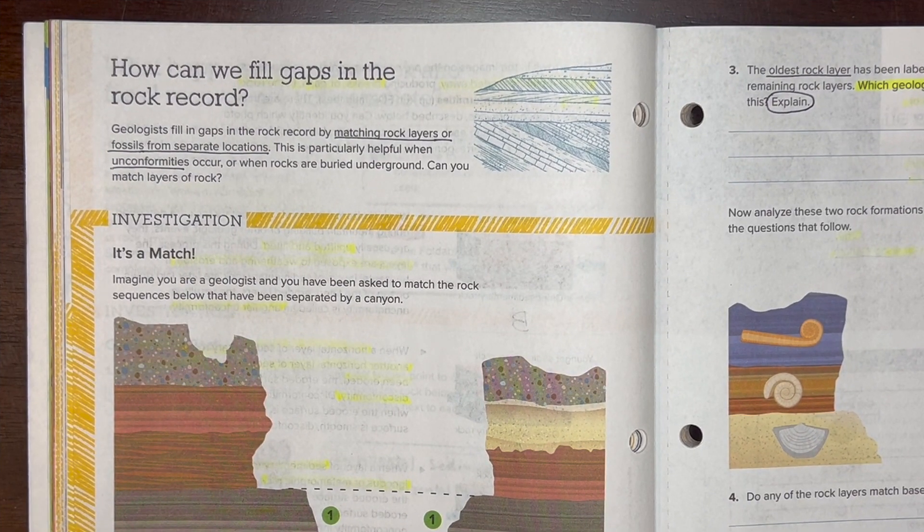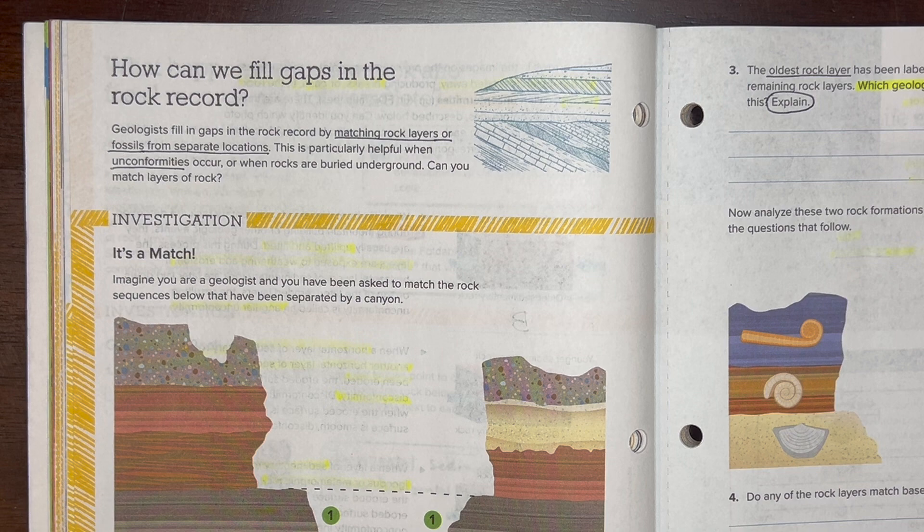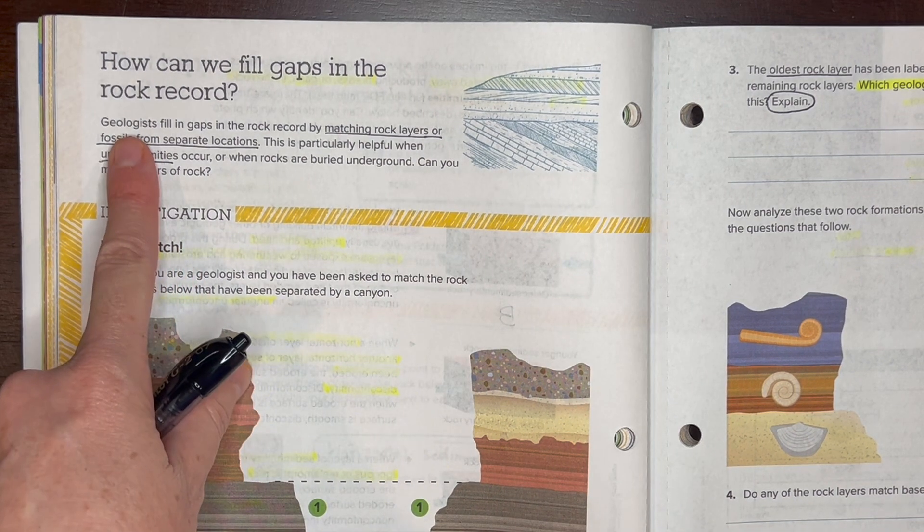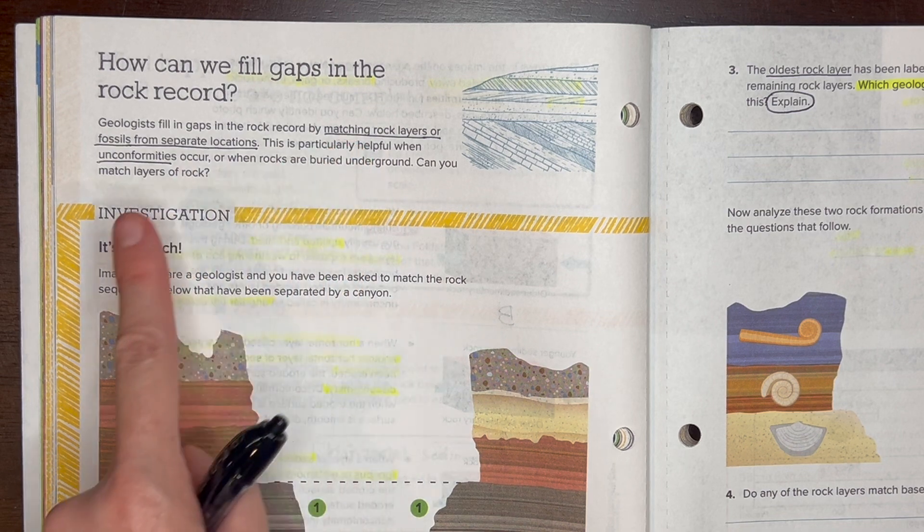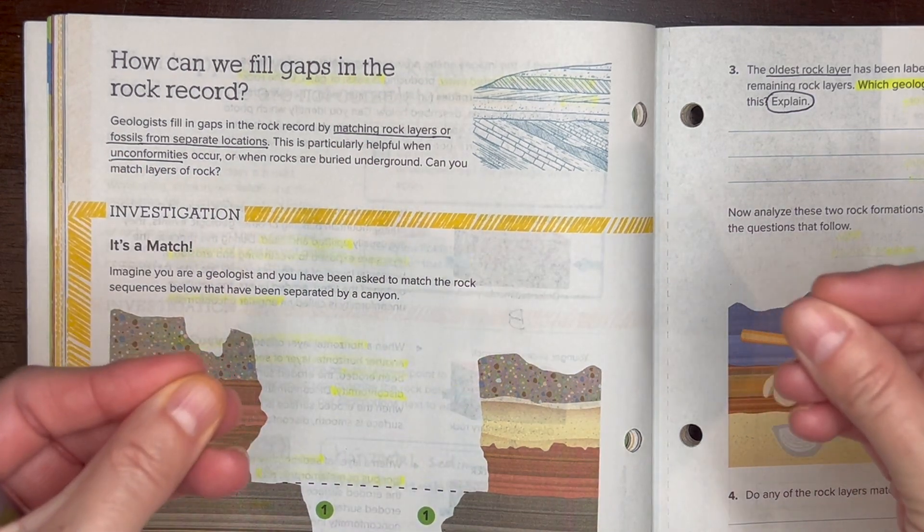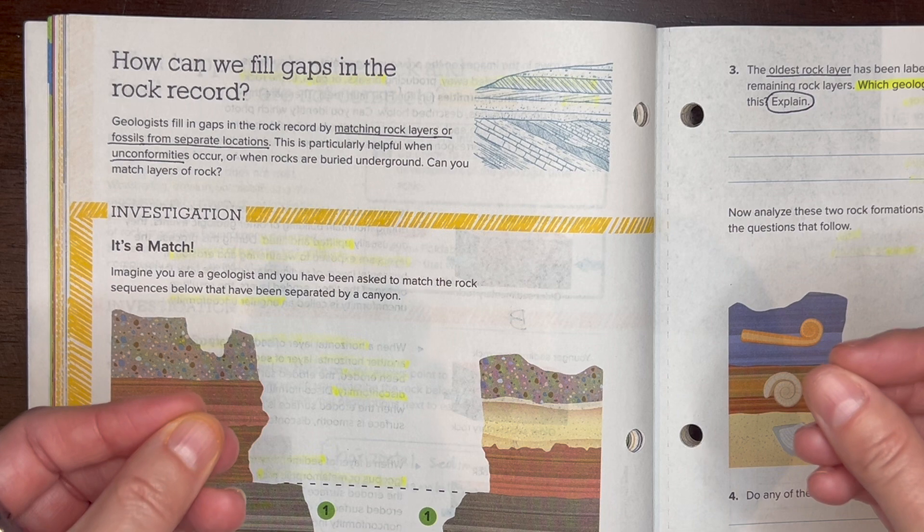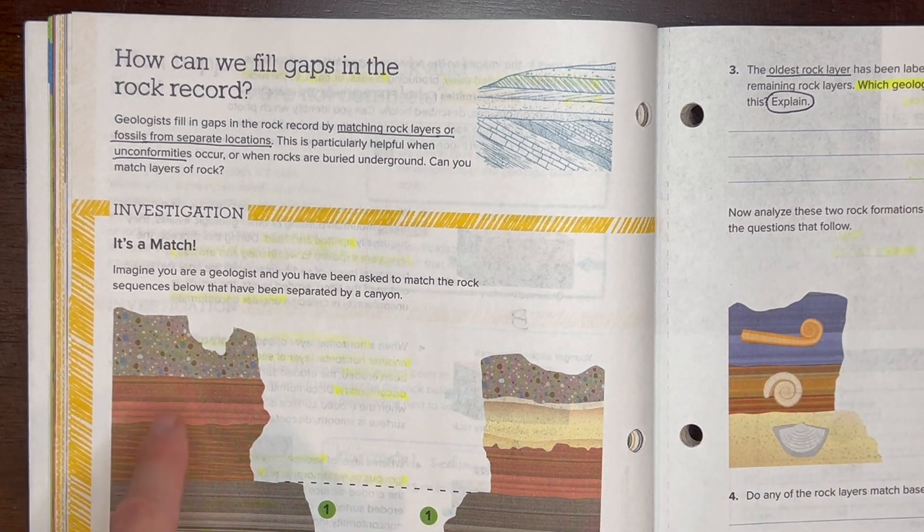So we just learned that there are gaps in the rock record, so what can geologists do to fill those gaps? They can match rock layers or fossils from separate locations, and they often do this when there's unconformities.